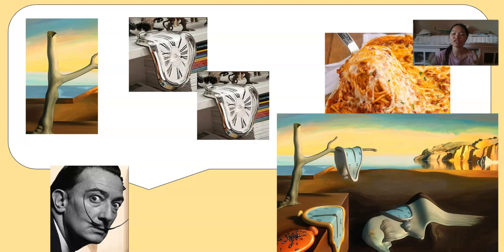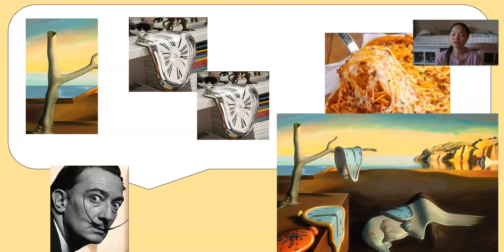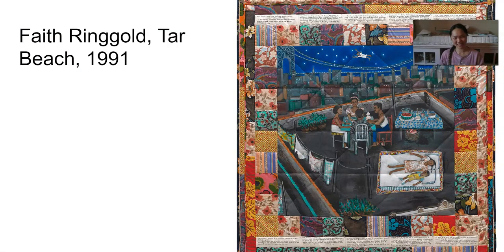He started thinking about how natural, realistic things in life could start looking more dreamlike — more like things you would make up in your head. So he had this landscape painting that already had a lot of realistic things in it, and he added stuff he made up. These clocks in real life don't really look like melting cheese, but with his skill he was able to paint it.